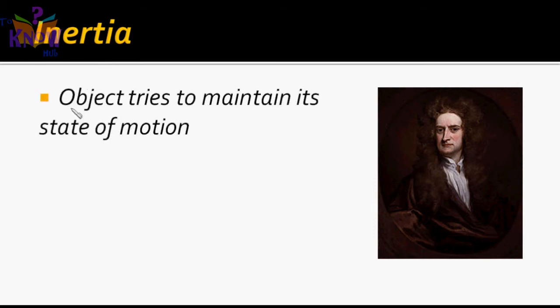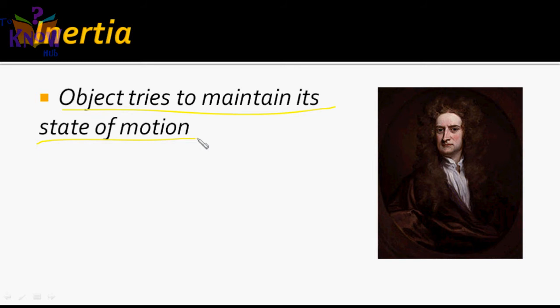Newton's first law talks about a concept called inertia. Inertia is a property of an object because of which it tries to maintain its state of motion — meaning if it is moving straight, it wants to move straight; if it is moving at a certain speed, it wants to keep moving at that speed unless some external force compels it to change its state of motion. Science and geography coming together.